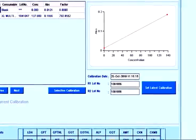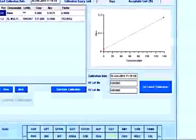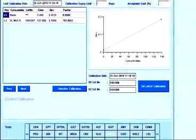The calibration trace provides complete information to the operator including the time of calibration. For immunoturbidometric assays, up to 10 standards can be used for calibration.